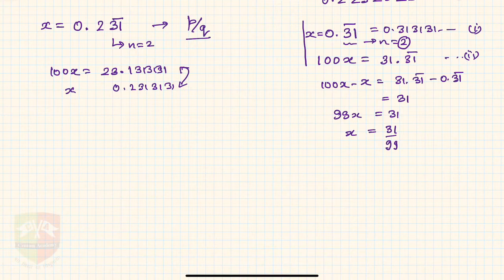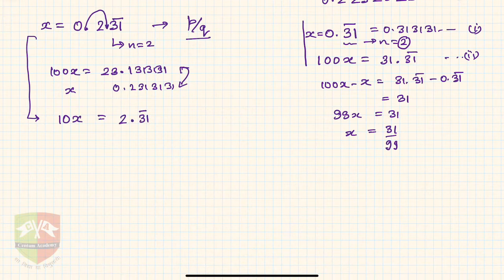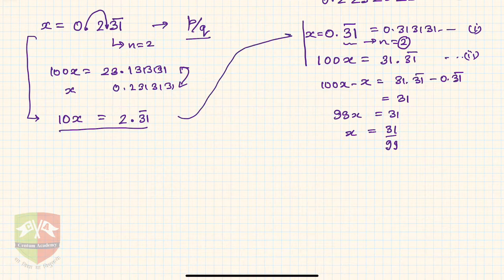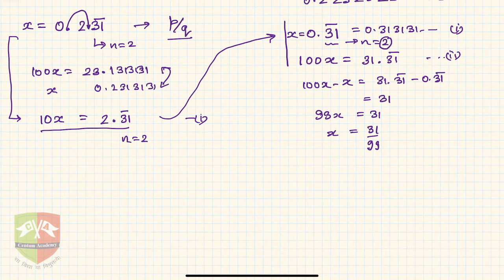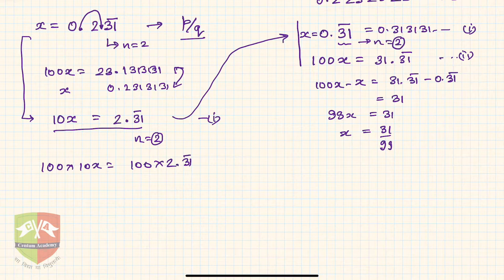What we do in this case: first of all, shift the decimal to the position just before where the repeating starts. The digit 2 is not getting repeated, so we shift the decimal just after 2 and before 3. We multiply by 10, so 10x equals 2.31 bar. This is equation number 1. Now count n: two digits are repeating, so multiply equation 1 by 100.